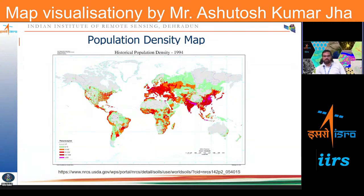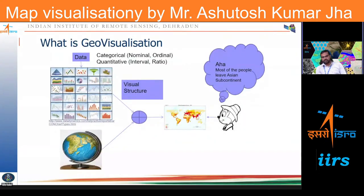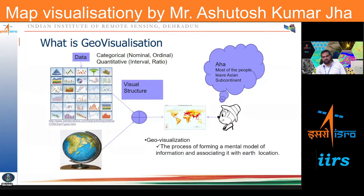Maps are not only for showing particular attribute information — the data representations also invite users to ask additional questions beyond just 'when' and 'where,' including associations between different places and their context. For example, a map user may conclude that most people live in Asian subcontinents. The overall objective of the geo-visualization process is basically to form a mental model of information and its associations with a particular location.